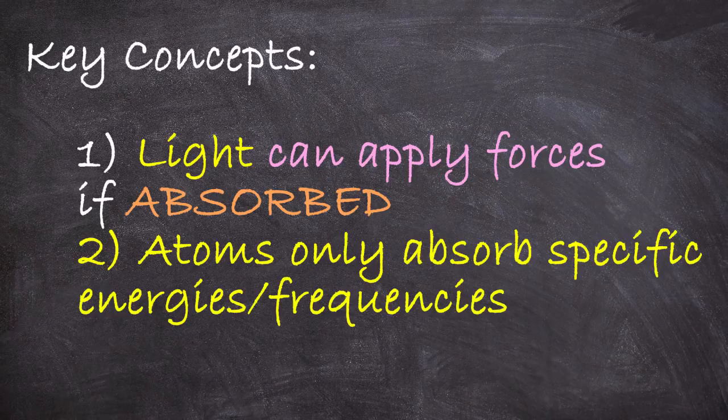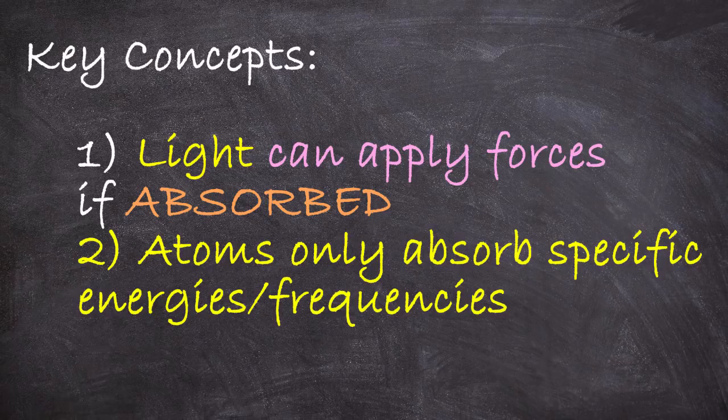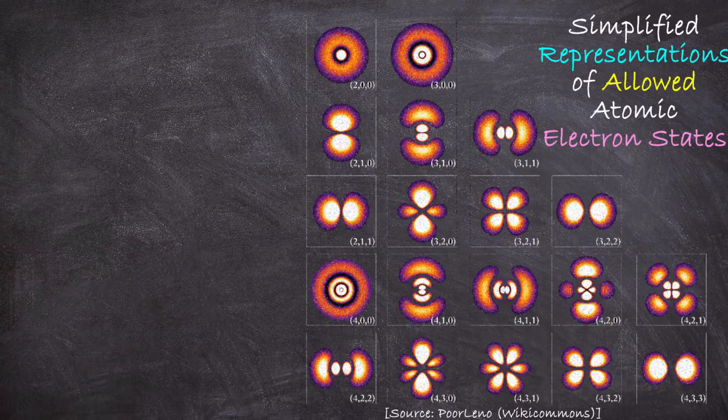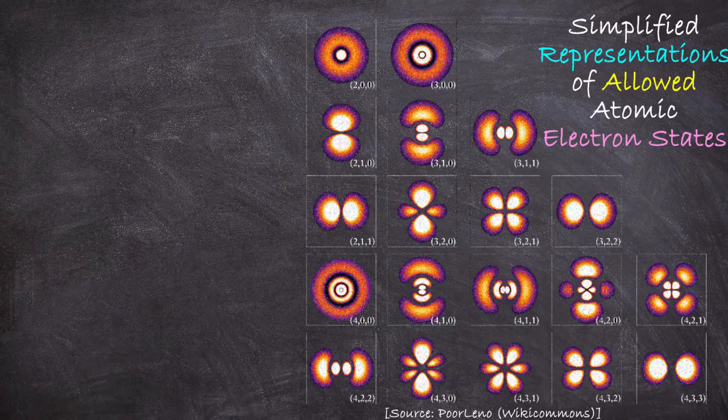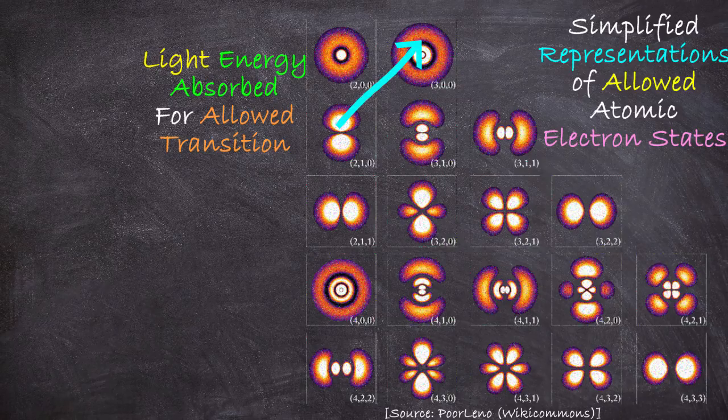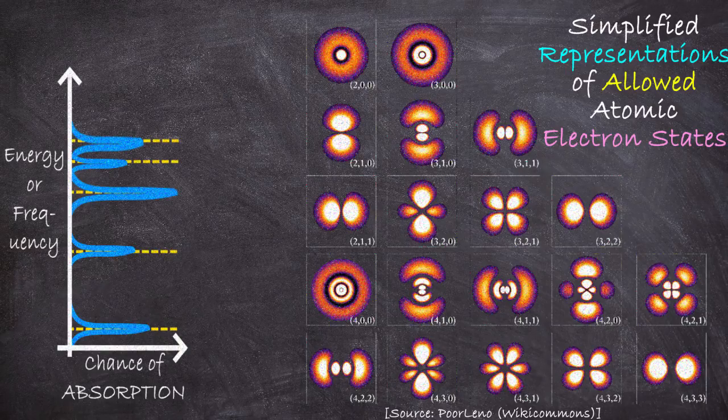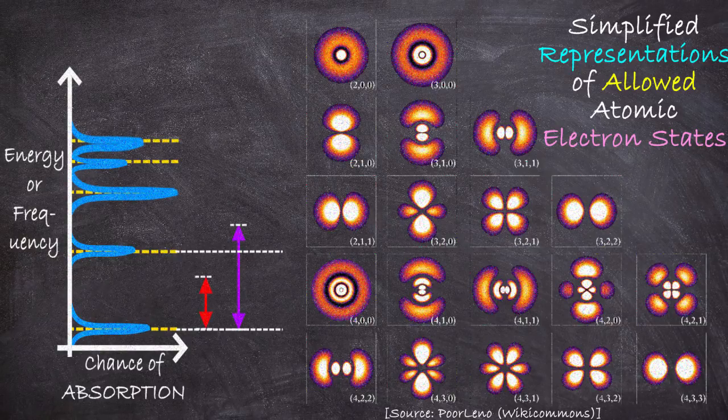The first is that a given type of atom will only absorb light of a certain fairly precise set of frequencies called atomic resonances. In a nutshell, the reason for this is because an atom can only absorb light if it can use the energy of that light to transition from one state to an excited higher energy state. And due to quantum physics, the energies of these sorts of transitions are generally discrete. Meaning it's kind of like Goldilocks. If the frequency of light is too high or too low relative to one of these resonances, the atom won't absorb its energy because it has nowhere to put it.